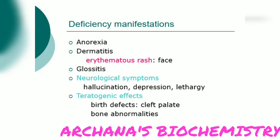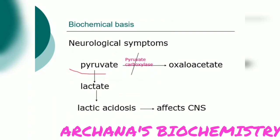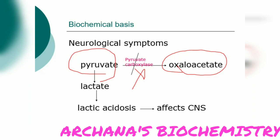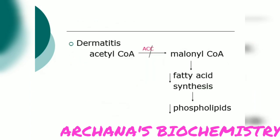Clinical manifestations of biotin deficiency include weight loss, anorexia, erythematous rash (dermatitis), glossitis (inflammation of the tongue), hallucination, depression, lethargy (neurological symptoms), and teratogenic defects such as bone abnormalities and birth defects. The biochemical basis: pyruvate carboxylase is a biotin-dependent enzyme. When biotin is deficient, pyruvate cannot be converted to oxaloacetate; instead, all pyruvate is converted to lactate, leading to lactic acidosis, which affects the central nervous system and causes neurological symptoms.